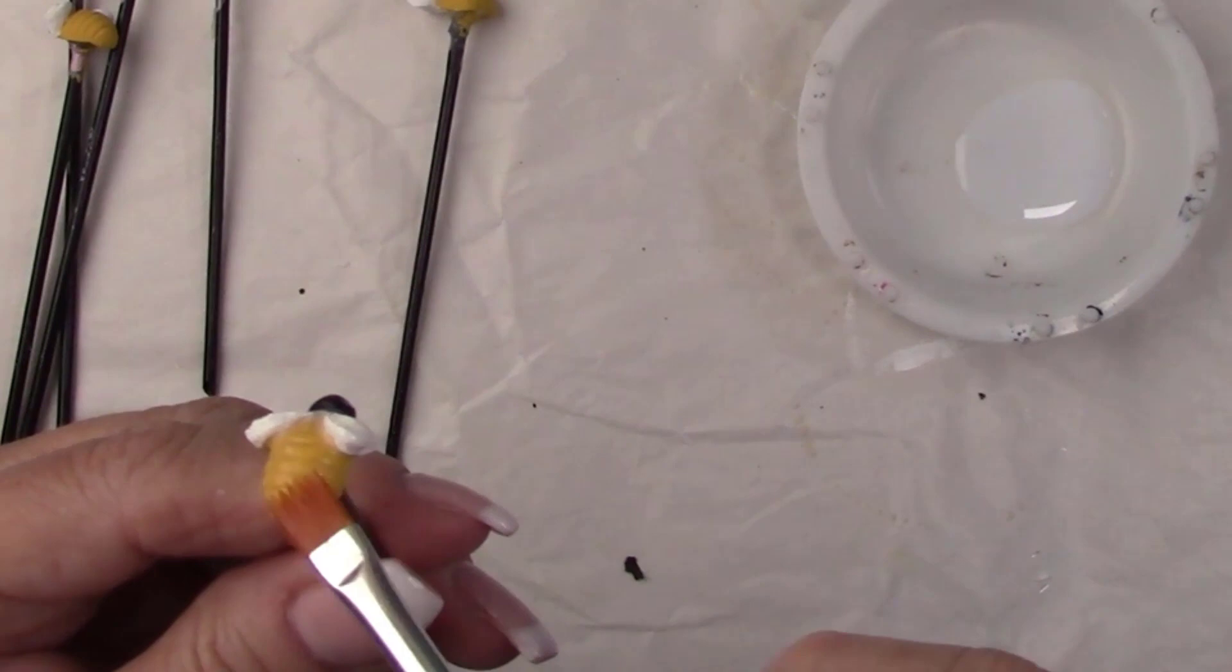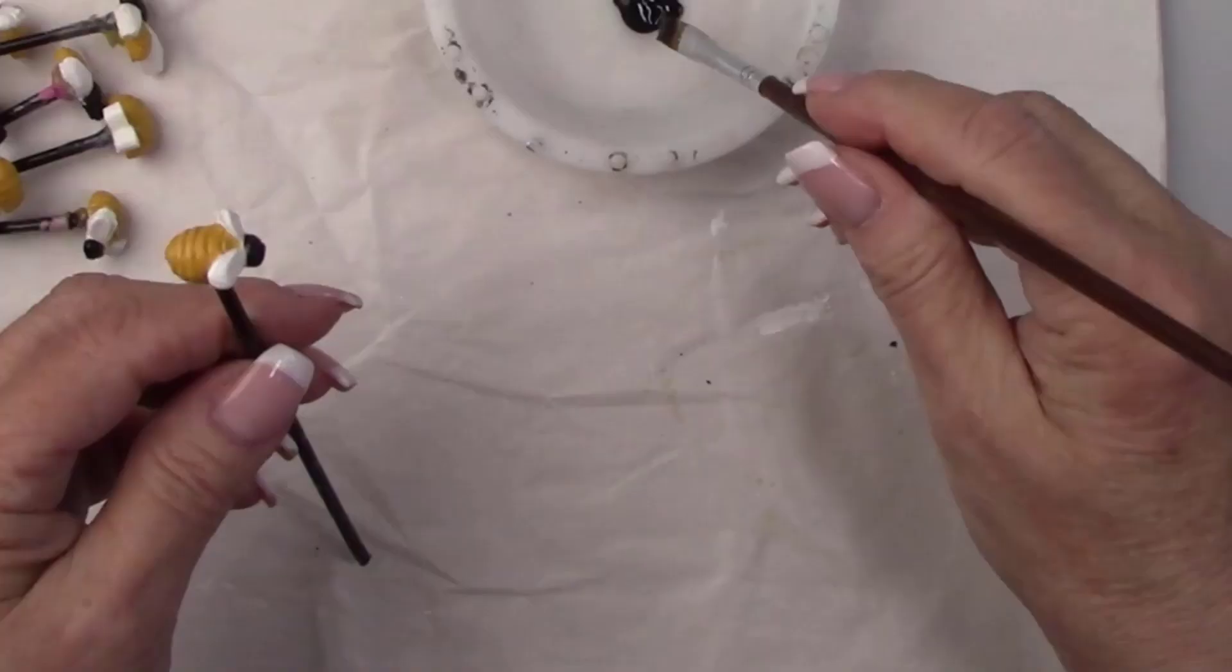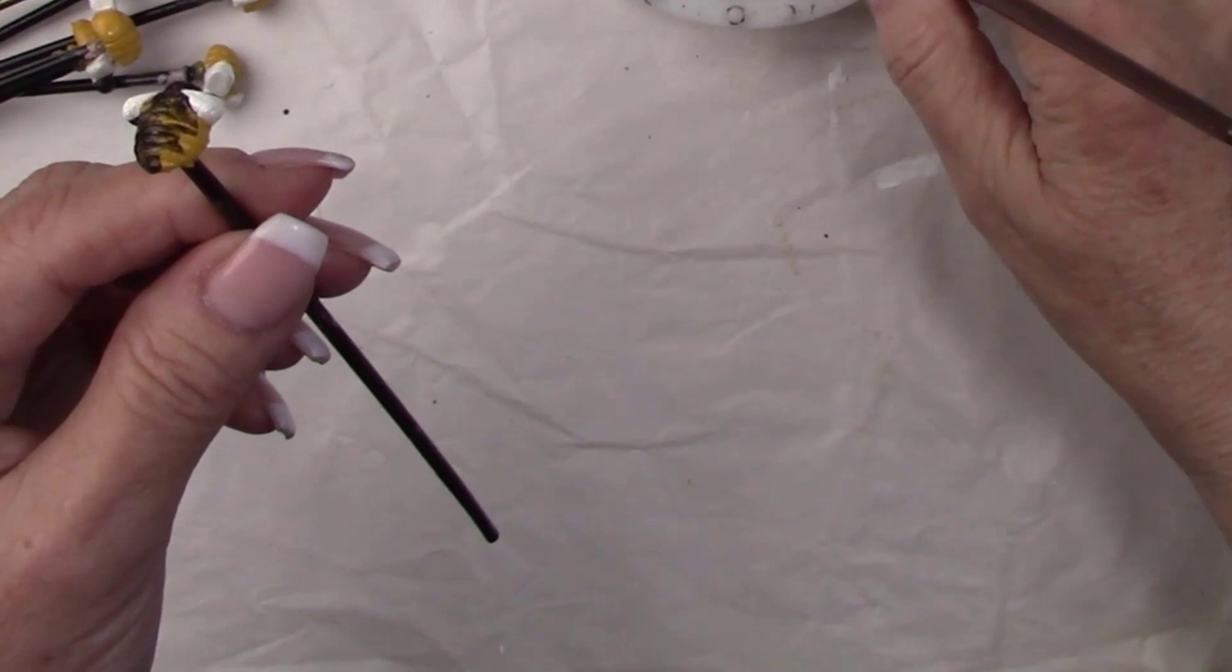I'm using Vintage Effect Wash in black for my antiquing medium. I'll brush this on and then wipe it off right away. It will stay in all the cracks and crevices, creating all my little black lines on the bees' bodies.